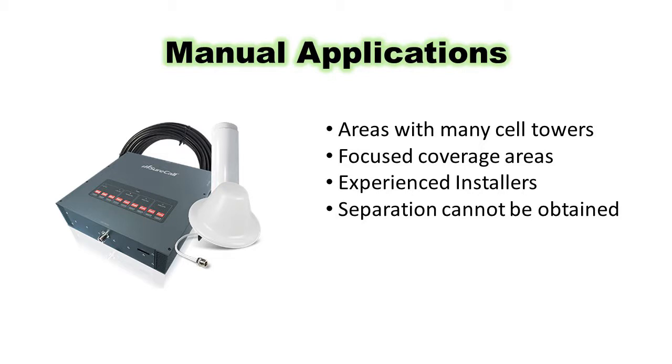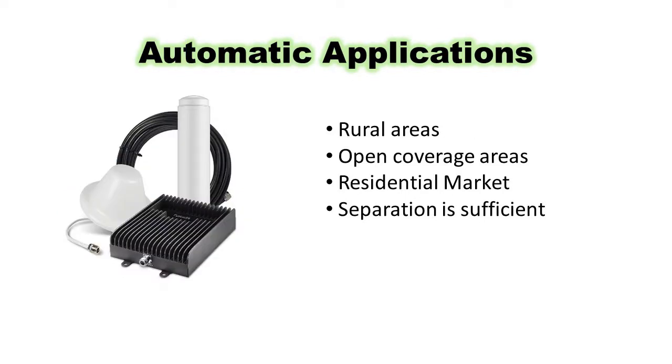Manual attenuation is also important if you can't get enough separation between the outside and the closest inside antenna. Keep in mind that increasing the distance between the internal antennas and the outside antenna is often a better solution than manually adjusting the booster. Automatic attenuation works well in more rural areas where the cell towers are more spread out.